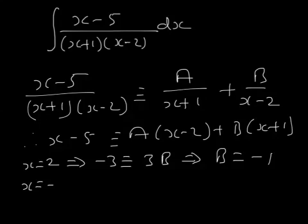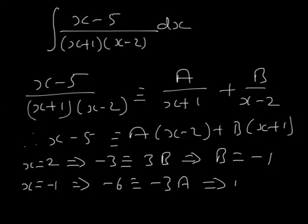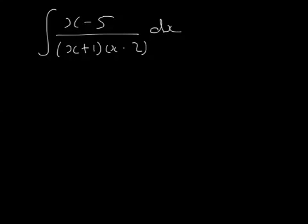Let's take x equal to minus 1. Then we've got minus 1 minus 5, that's minus 6. x minus 1 in here, so that's minus 3A, and then minus 1 plus 1 is 0. So that means A equals 2. Go back to the original question, which is x minus 5 over (x plus 1)(x minus 2). We can split this into partial fractions, what we've just done. We said that A was 2 and B was minus 1.